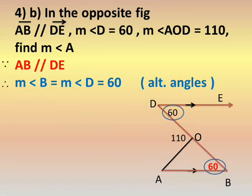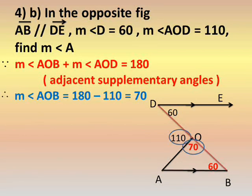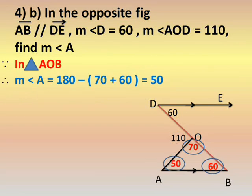We want angle A, which is in triangle AOB. We need the other angles first. Since AB is parallel to DE, measure of angle B equals measure of angle D equals 60 degrees, because they are alternate angles. Angle AOB is adjacent and supplementary to angle AOD of 110 degrees, so angle AOB equals 180 minus 110, giving 70 degrees. In triangle AOB, measure of angle A equals 180 minus (70 plus 60), which equals 50 degrees.